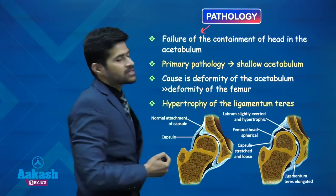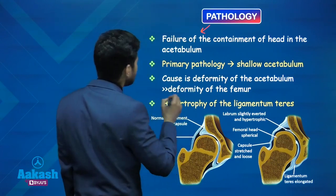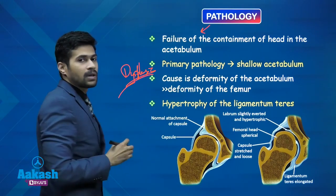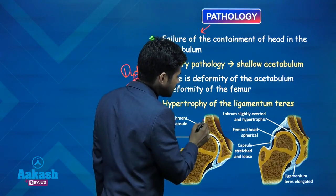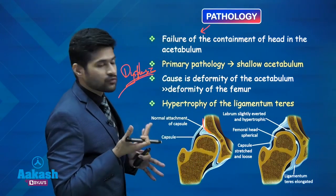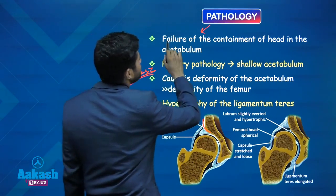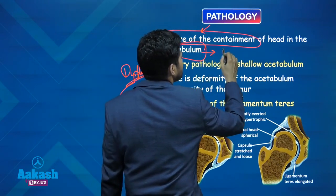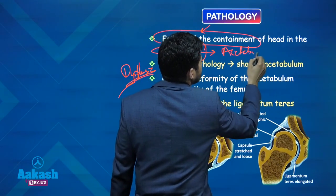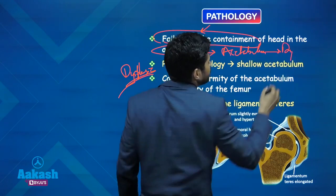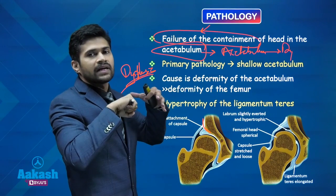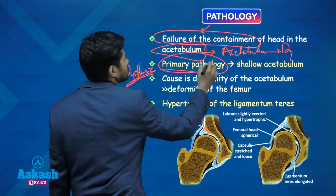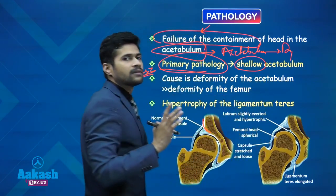What is the pathology of developmental dysplasia of the hip? Dysplasia basically means abnormal configuration of the bone — abnormal development. There is failure of containment of the femoral head in the acetabulum because of dysplasia of the acetabulum. The acetabulum is deformed and shallow, so the hip cannot be contained and gets dislocated or subluxated. The primary pathology is a shallow acetabulum, not a deformed femoral head.